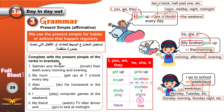Now complete with the present simple. Selman and Amir — two boys, so they: they brush their teeth every morning and evening. My mom — she: my mom gets up at seven o'clock every day. Alan — he: Alan does his homework in the afternoons. I play computer games at the weekend. My friend — one friend, could be he or she: watches TV after dinner and goes to bed at midnight.